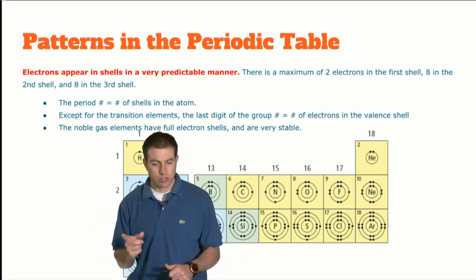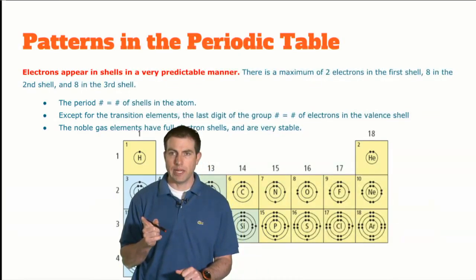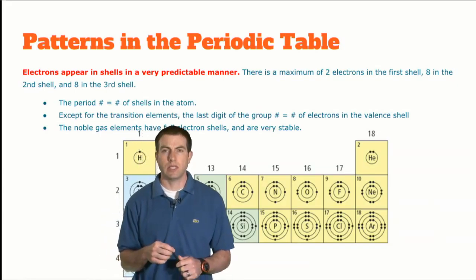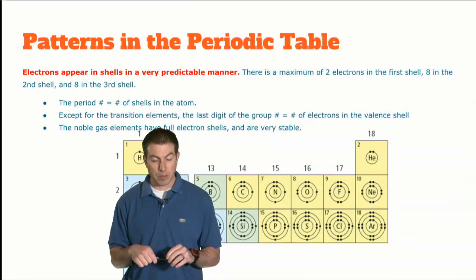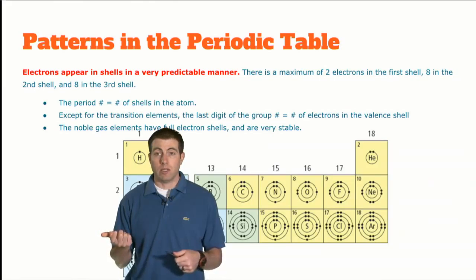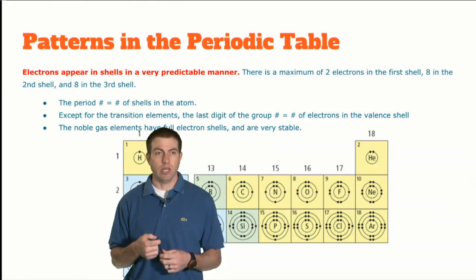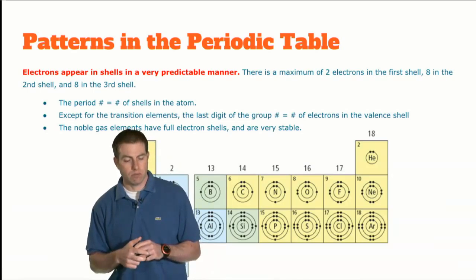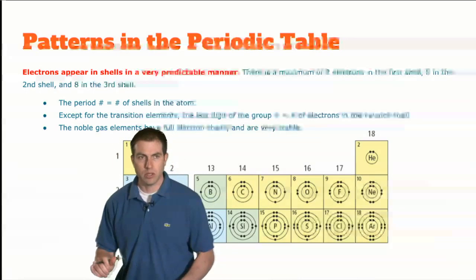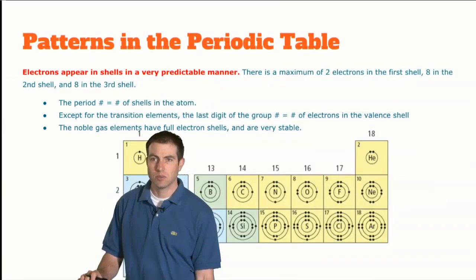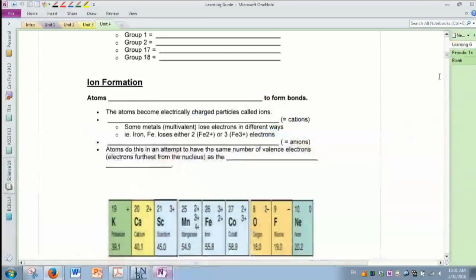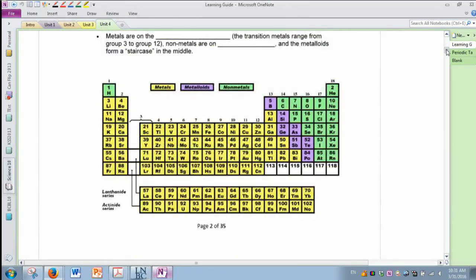We started talking about patterns in the periodic table — I believe that's where we left off. A question came in about page seven or nine of the learning guide, about relative mass. That was referring to the chart in the notes: protons, neutrons, and electrons. If an electron has a mass of one, how many electrons would it take to make up a proton or neutron? Protons are 1836 — I'll go back to the notes to verify.